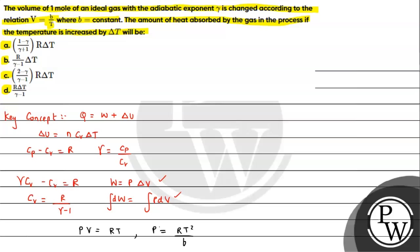We need to calculate dV from the relation V equals b divided by T. Differentiating, dV equals minus b divided by T squared times dT, since the differentiation of 1/T gives minus 1/T squared. This is the expression for dV that we will substitute to calculate the work done.